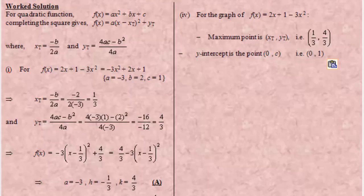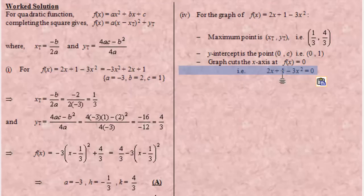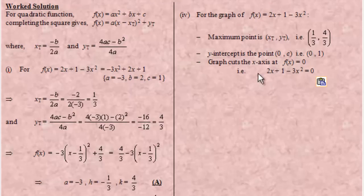Where will the graph cut the x-axis? The graph cuts the x-axis where f of x is zero — where y is equal to zero. Therefore that is where our function becomes equal to zero, and we can write our quadratic equation. We need to solve this quadratic equation to find the x-values where the graph cuts the x-axis. Those x-values are called the roots of the quadratic equation.